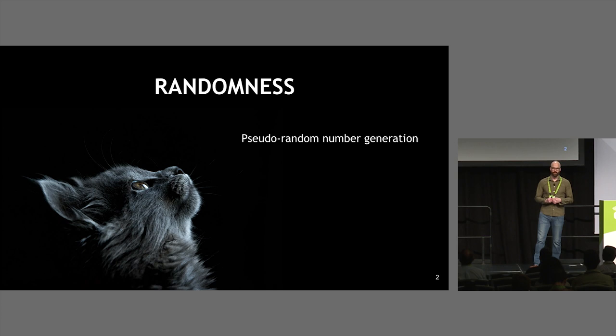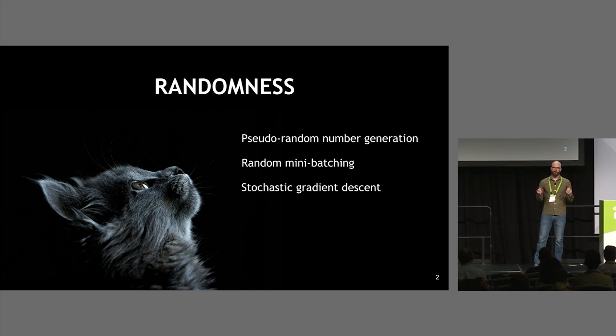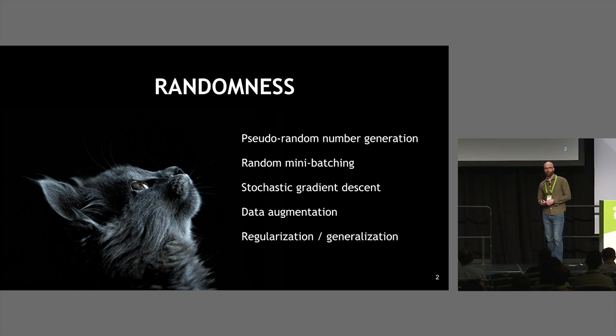Randomness is actually really important for deep learning. We use pseudorandom number generators all the time because we need random mini-batching to do stochastic gradient descent — it's important so we can use a smaller dataset to get a more robust model. We also use pseudorandom number generation for data augmentation to have more training with less original data, which makes the model more regularized and more generalizable.